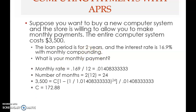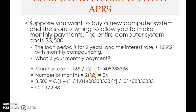With monthly compounding, the next thing you need to know is the number of months in a year, which is 12. Therefore, the number of months for the term — you cannot use two years here because it's not compounded once a year. You need to get the number of months for the term: two years multiplied by 12. So n multiplied by m gives you capital N = 24 months.